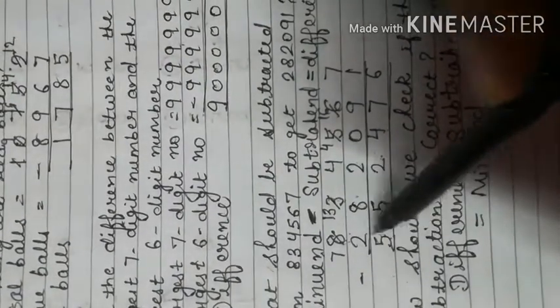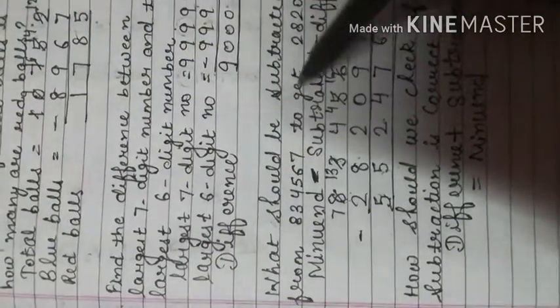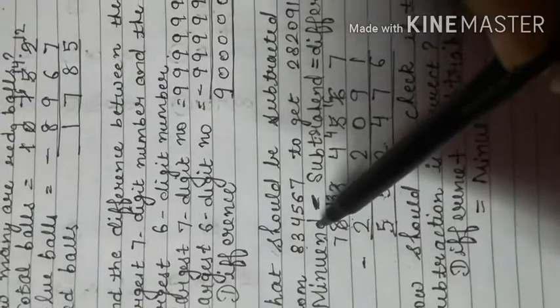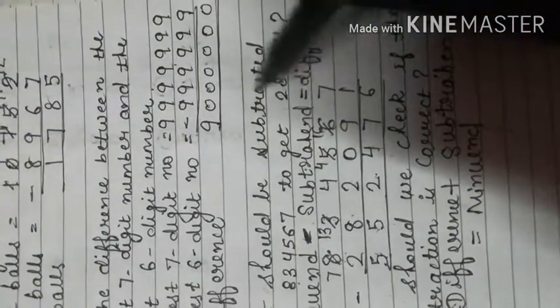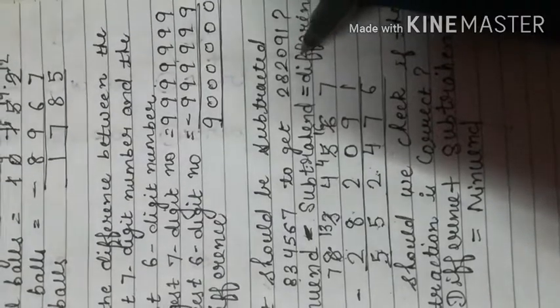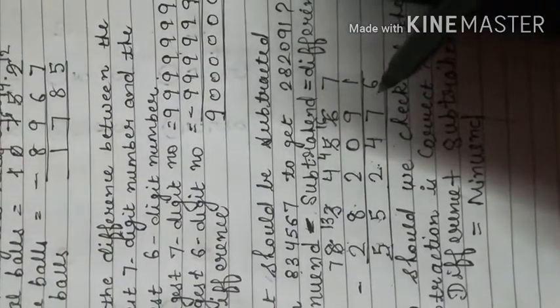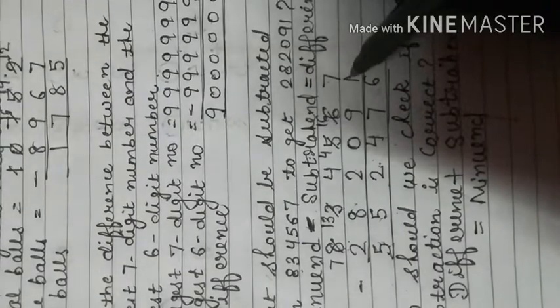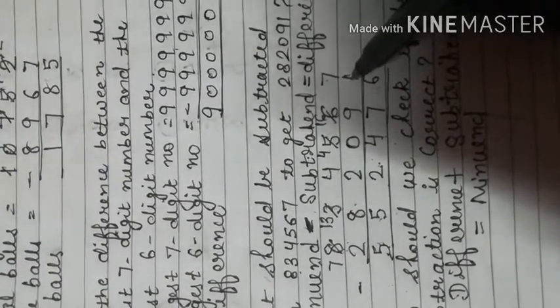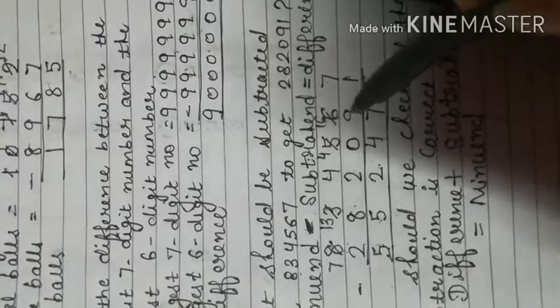The subtrahend is 5,52,476. That means 5,52,476 should be subtracted from 8,34,567 to get 2,82,091. The difference is 2,82,091.